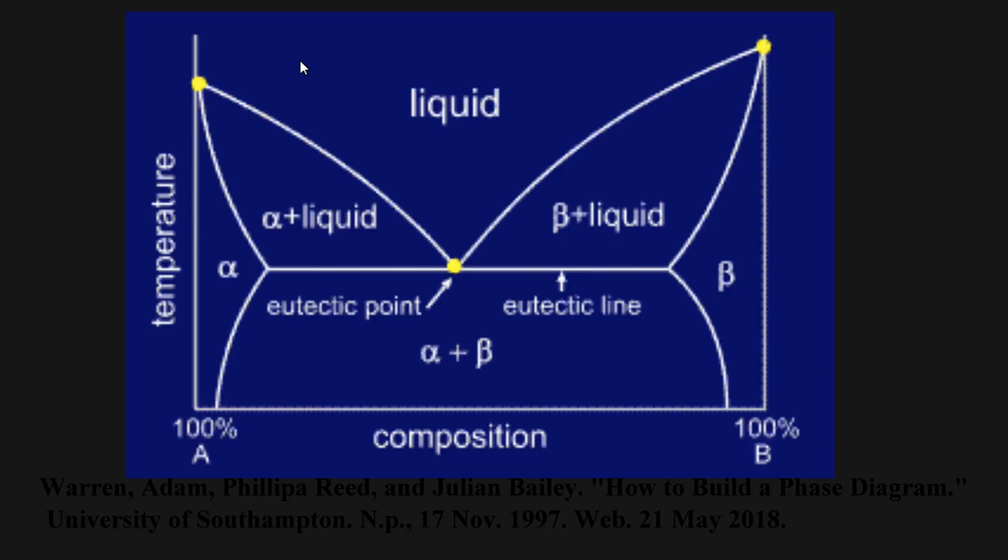If you notice the three yellow dots on the graph, these are the melting points of the pure A component, the pure B component, and the melting point of a eutectic alloy. What is interesting about eutectics is that at the yellow point in the middle of the graph, the freezing temperature of the alloy is less than the melting points of both metals that make up the alloy. The melting points of the base metals are denoted by the yellow dots on either extreme of the x-axis.